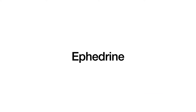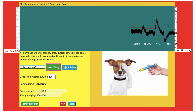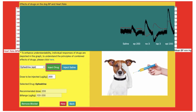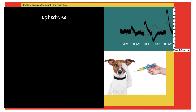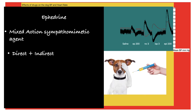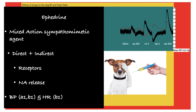The next sympathetic agent is ephedrine. Select the drug, inject, and look at the response. Ephedrine increases the heart rate as well as blood pressure. Ephedrine is a mixed-acting sympathomimetic agent with direct action on both alpha and beta receptors, and indirect action by increasing the release of norepinephrine from sympathetic nerve endings. Rise in blood pressure is due to stimulation of alpha-1 and beta-1 receptors, and the increase in heart rate is due to stimulation of beta-1 receptors.